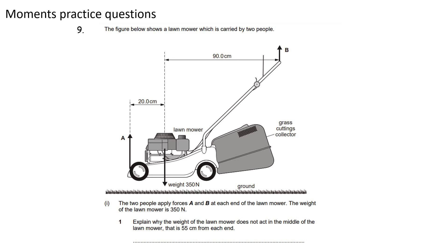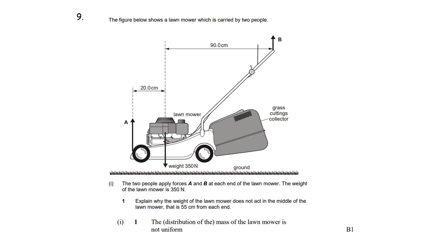One: explain why the weight of the lawnmower does not act in the middle of the lawnmower, that is 55 centimeters from each end. The answer here is the distribution of the mass of the lawnmower is not uniform. So if we had a uniform beam, there's a bar or something, then we could say that the center of gravity would be right in the center.